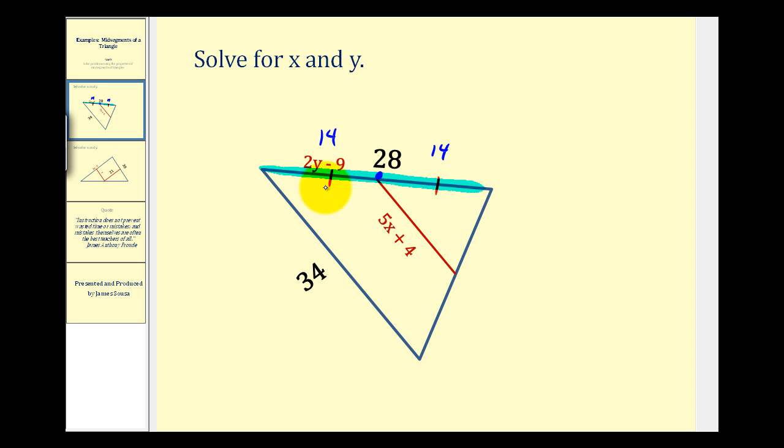And that's enough information to determine the value of y. Two y minus nine must equal fourteen. So we'll add nine to both sides. That would be zero, so we have two y equals twenty-three. Divide both sides by two.